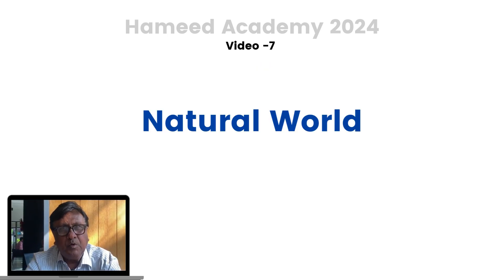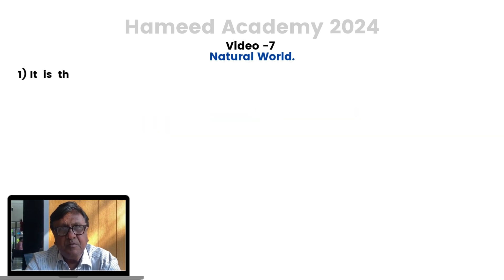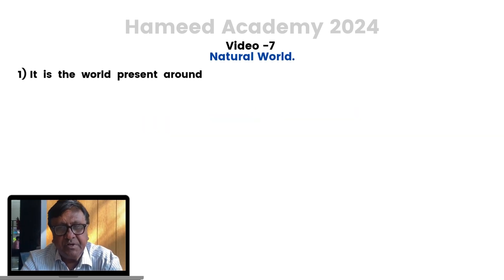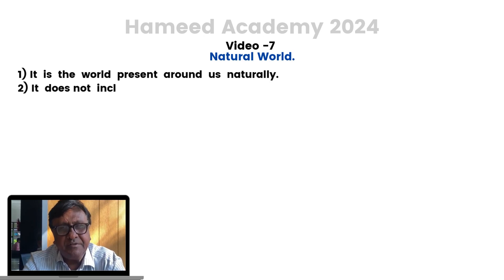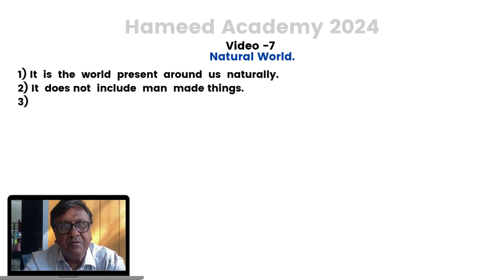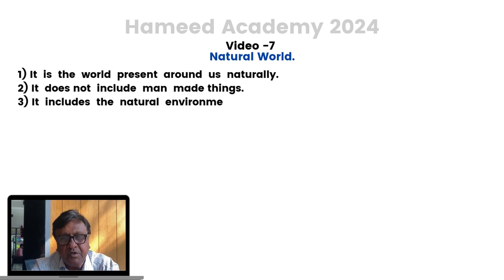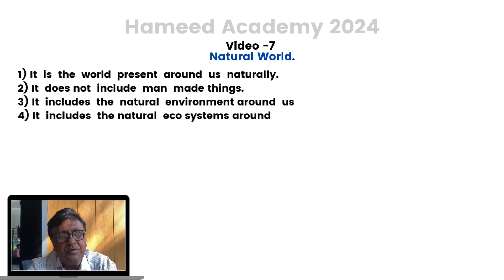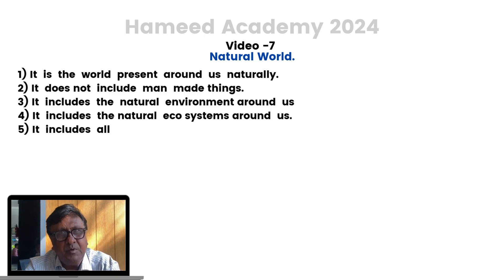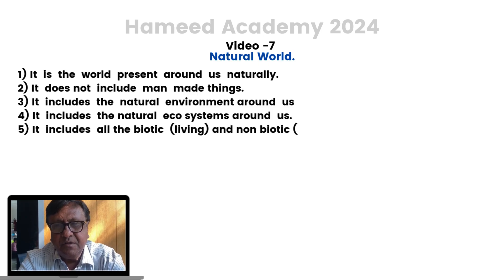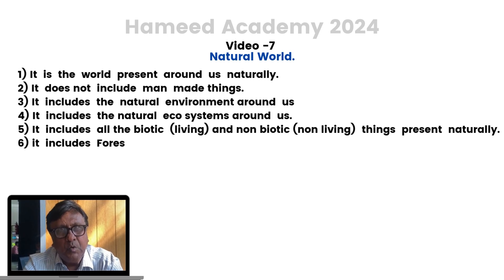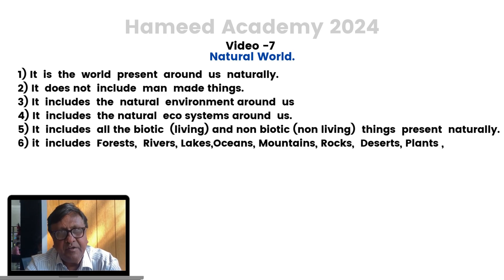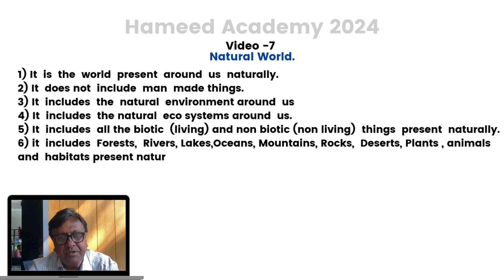Now we will try to know about natural world. It is a world present around us naturally. It does not include man-made things. It includes the natural environment and the natural ecosystem around us. It includes all the biotic, that is living, and abiotic, that is non-living, things present naturally. It includes forests, rivers, lakes, oceans, mountains, rocks, deserts, plants, animals, and habitats present naturally.